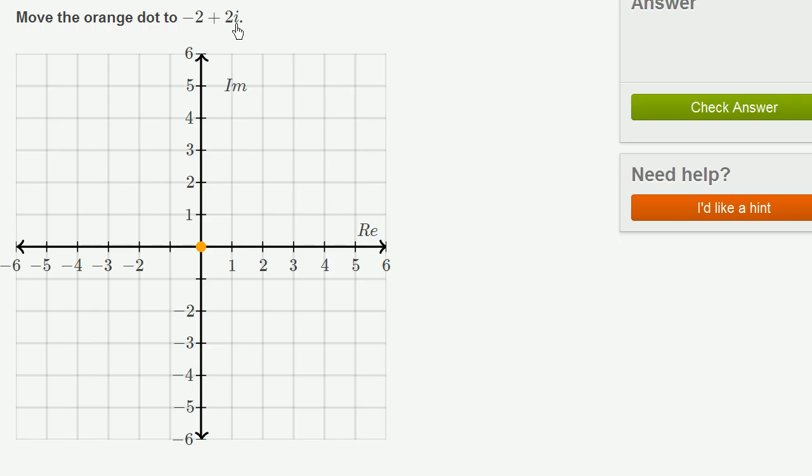It has an imaginary part. You have 2 times i. And what you see here is we're going to plot it on this kind of two-dimensional grid, but it's not our traditional coordinate axes.